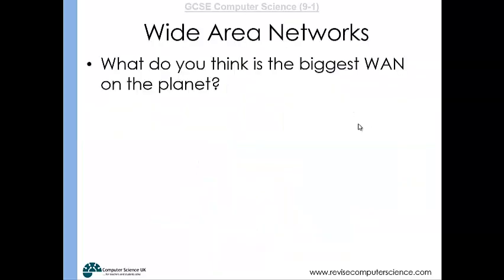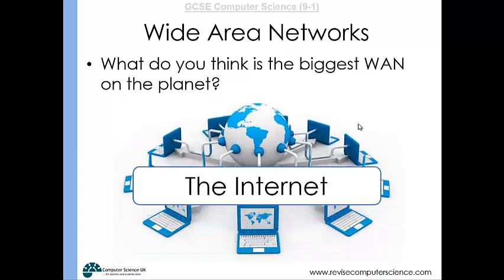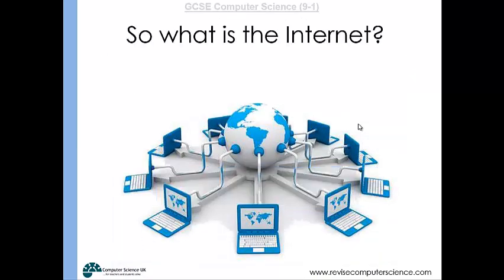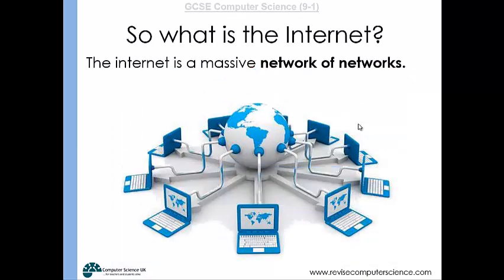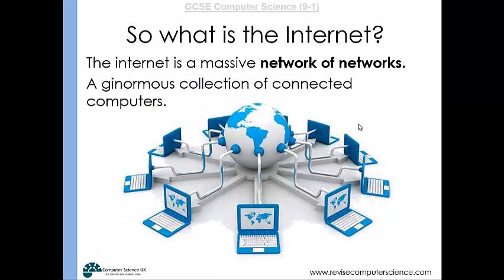The biggest wide area network on the planet is of course the internet, and it's important to recognise what the internet is. It's a network of networks — a gigantic collection of computers all connected together. Don't get confused with the World Wide Web, because the World Wide Web is just one of the services that the internet can provide. The internet is a network of networks; the World Wide Web is just one application of the internet. Another application might be the email system.